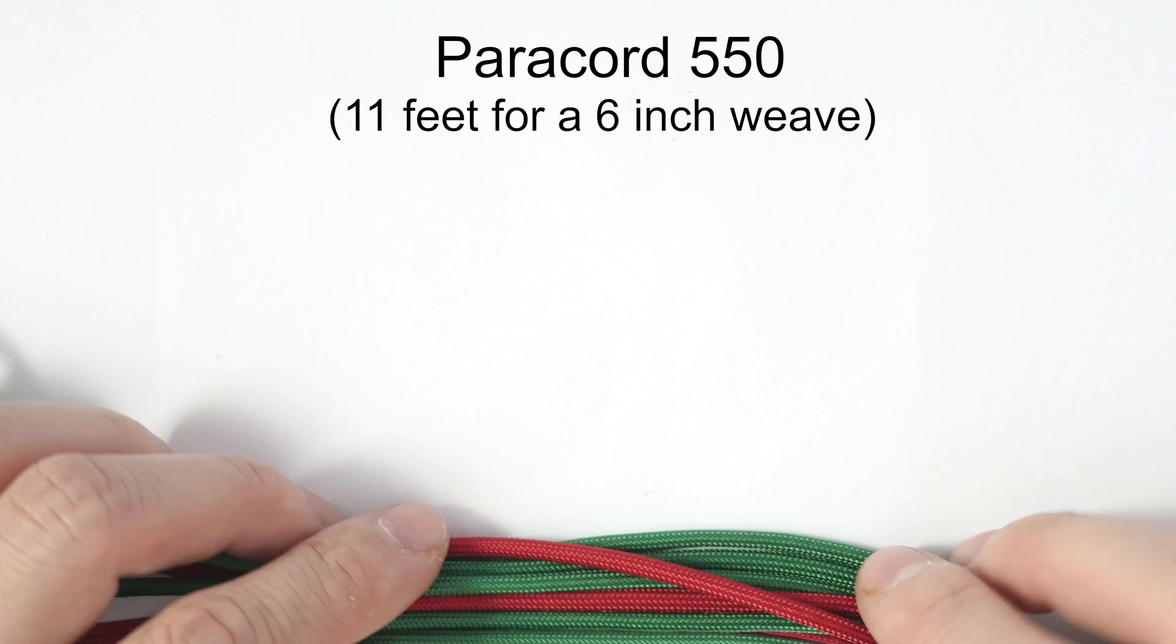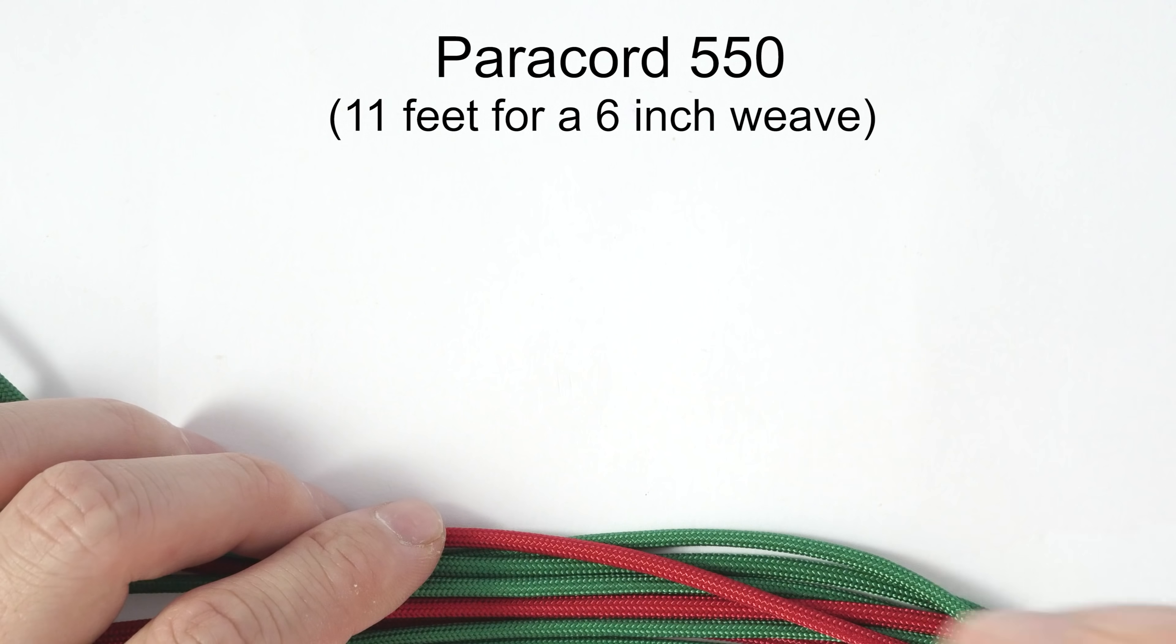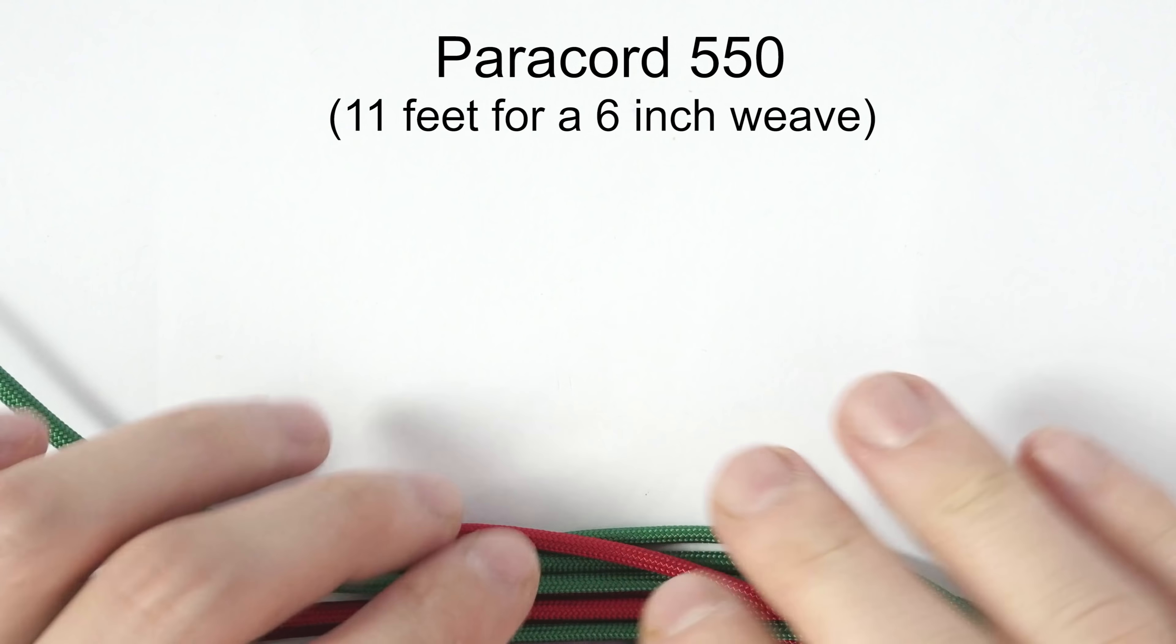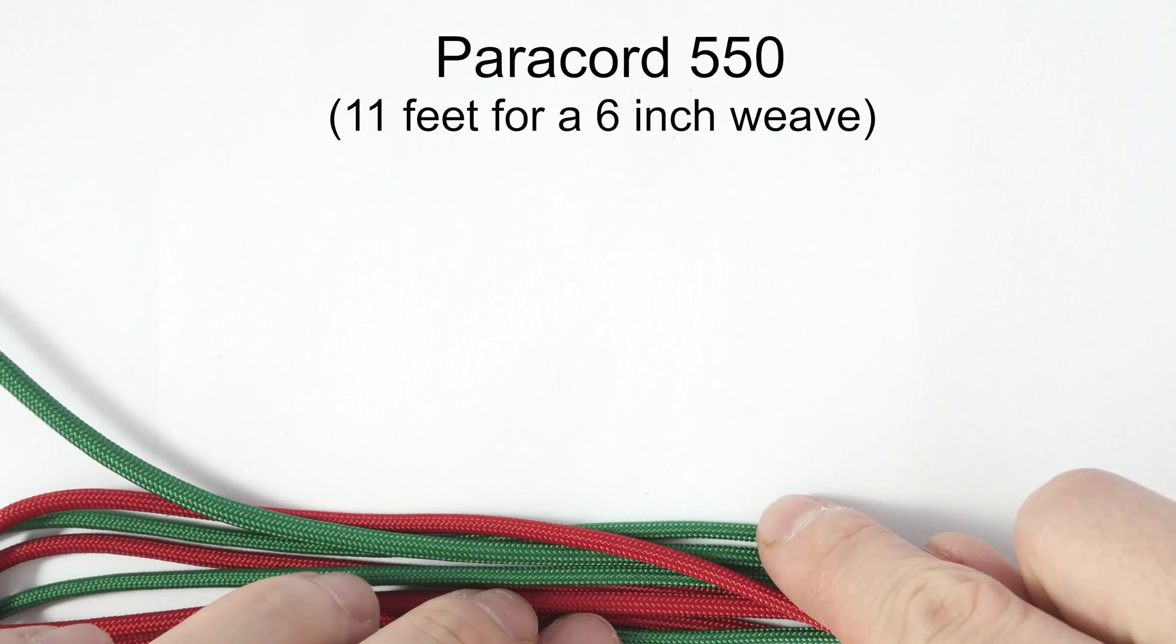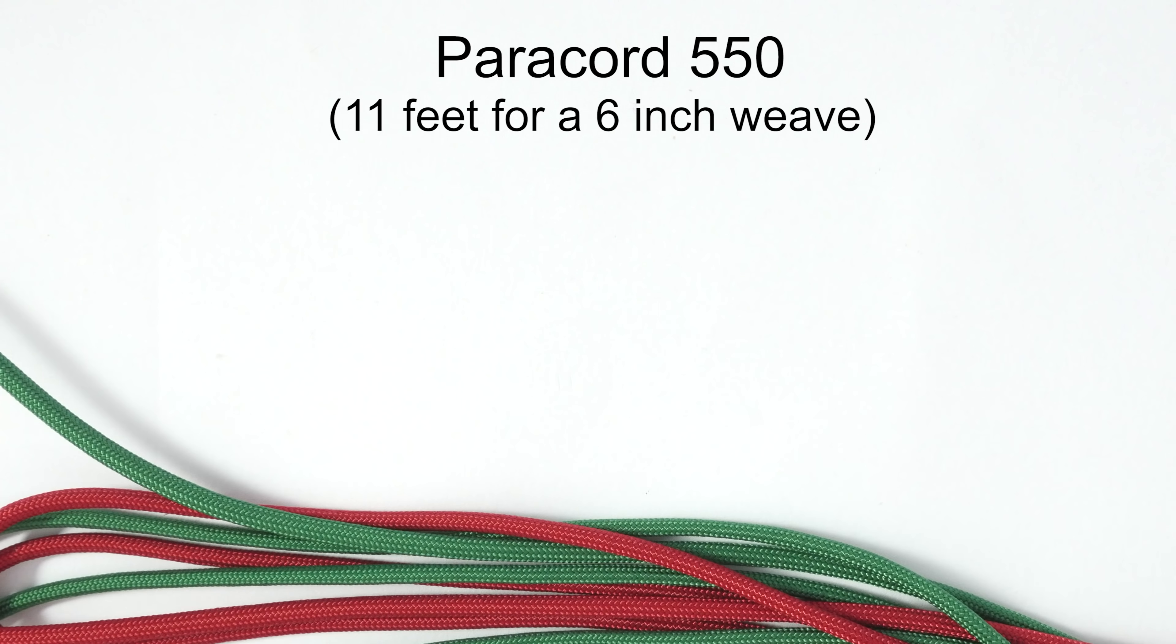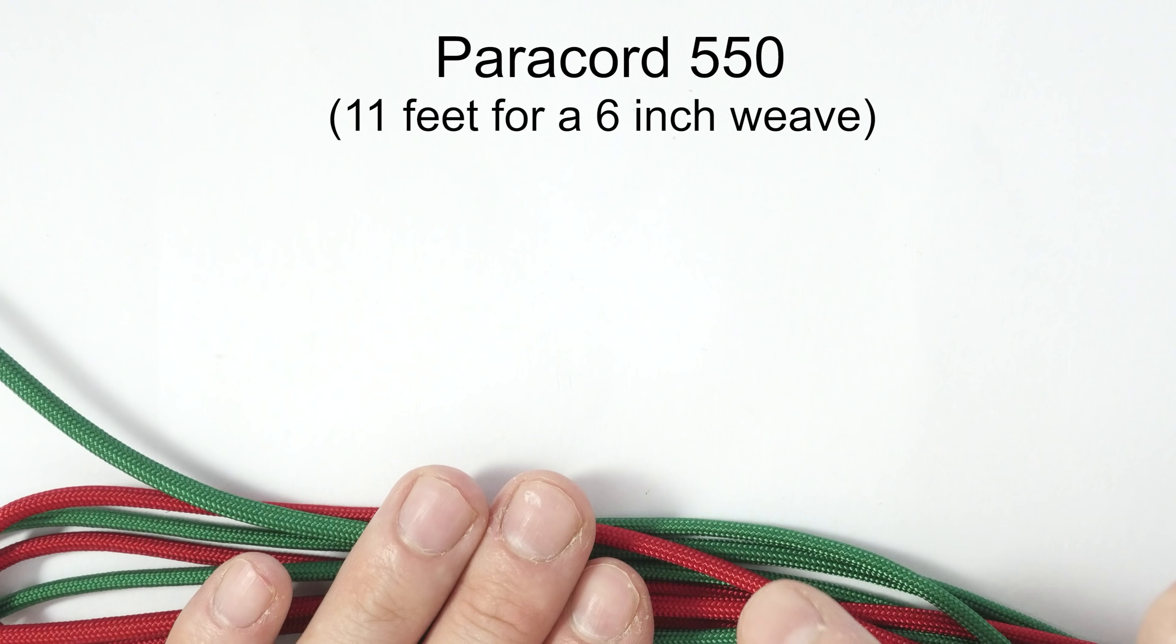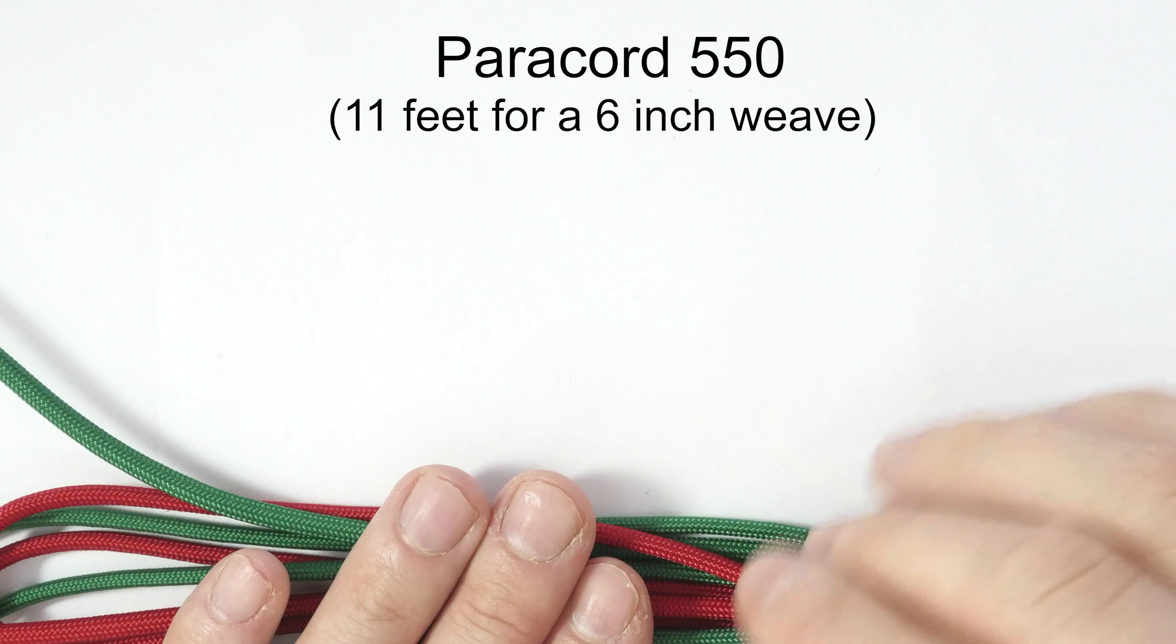In any case though, for a 6 inch weave you're going to need about 11 feet of paracord. So if you're doing a single color version, you're going to need one piece 11 feet long for a 6 inch weave. For a two tone version, you're going to need half that times two. So 5 and a half feet of one color and 5 and a half feet of another color.